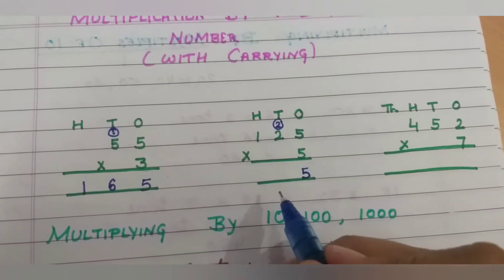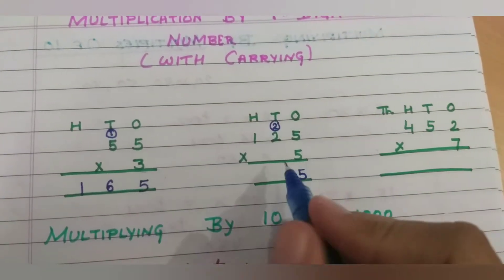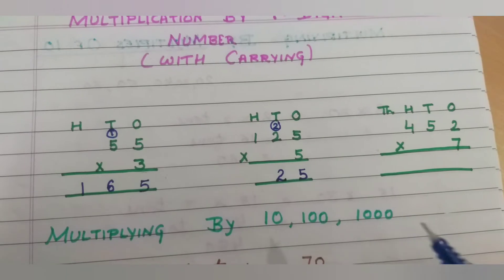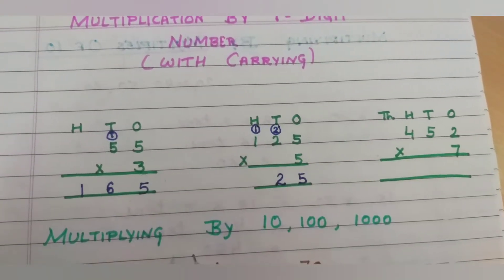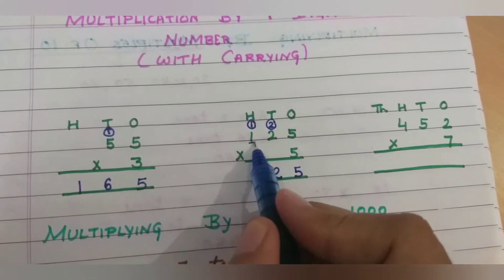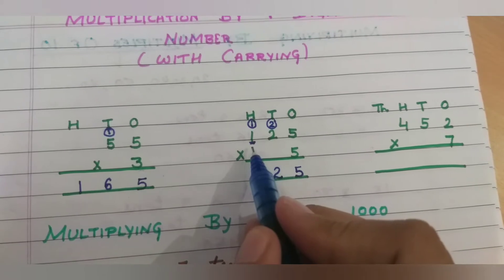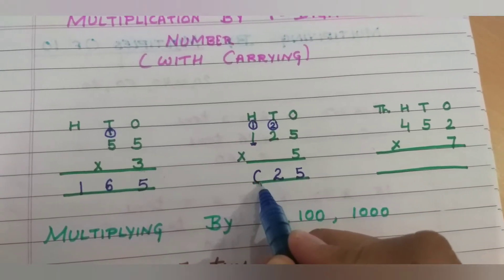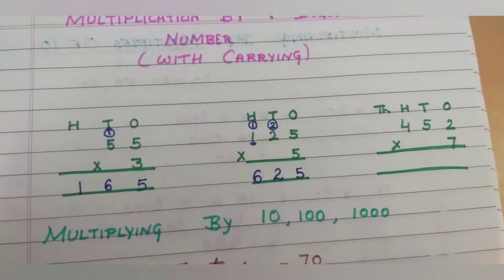Now, five twos are ten. Ten plus two is twelve. We will write two here and one will be carry. At the hundredths place we have one. Five ones are five, plus one is six. So our answer is six hundred twenty-five.